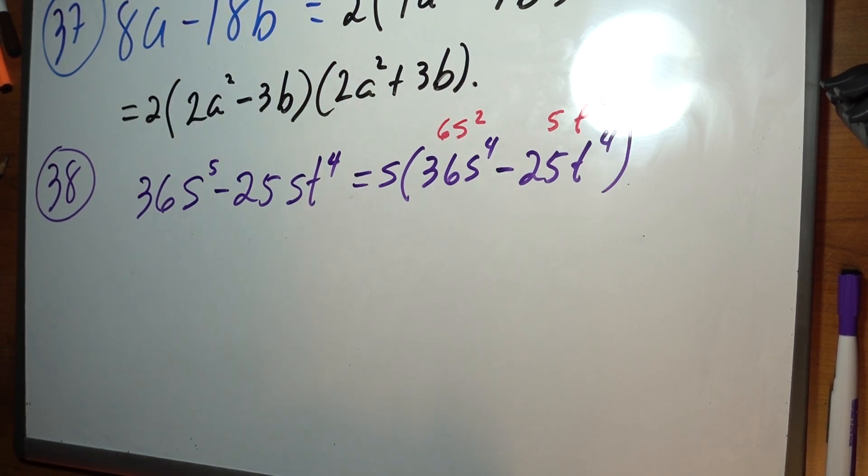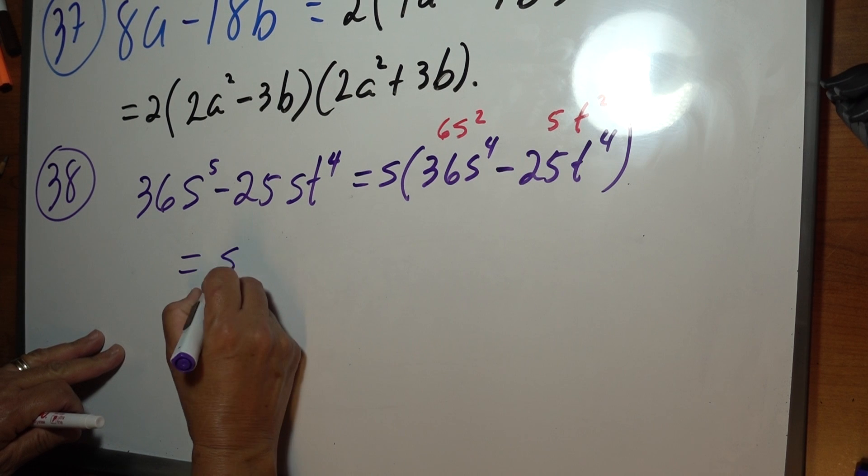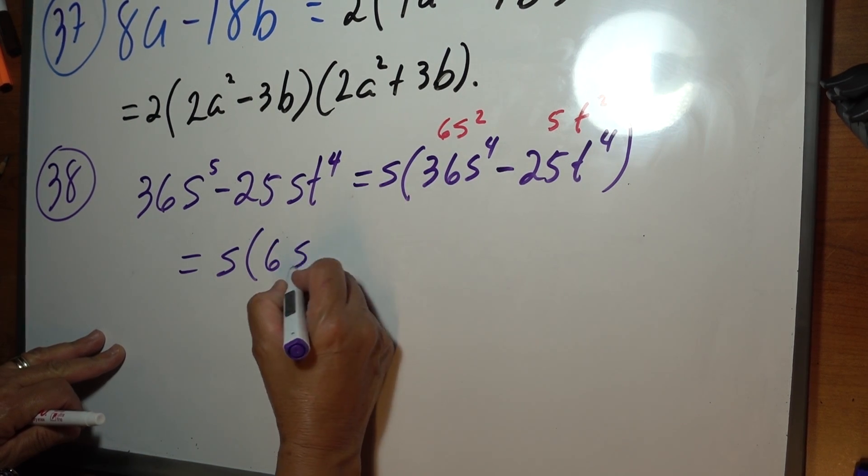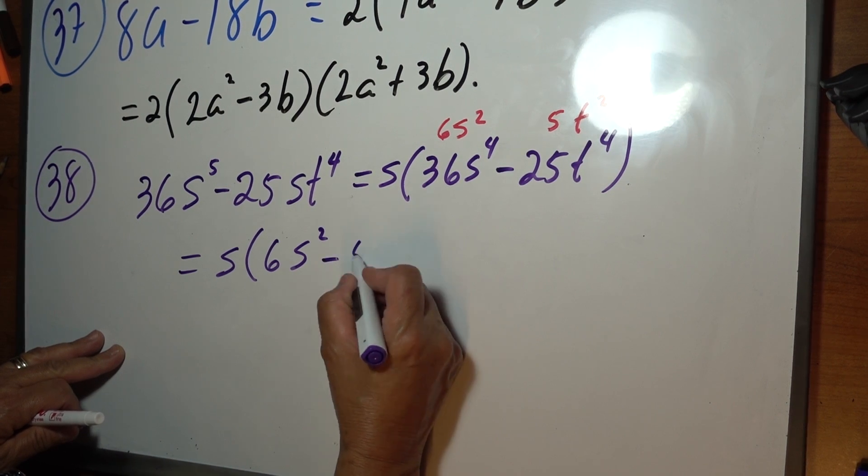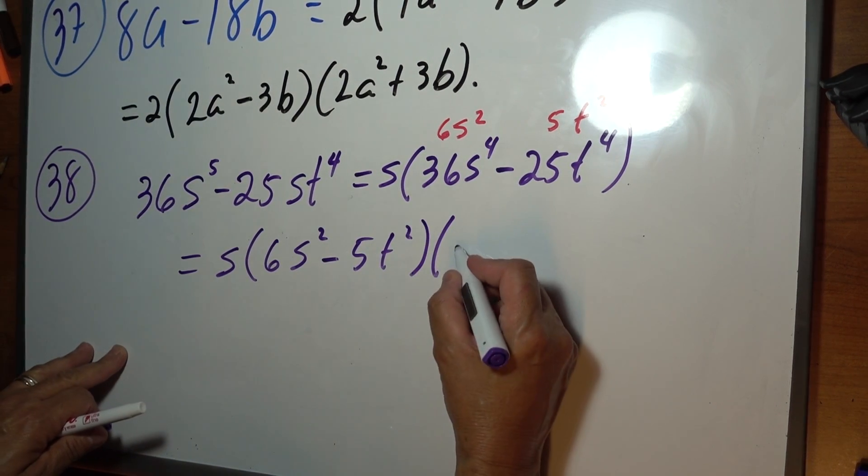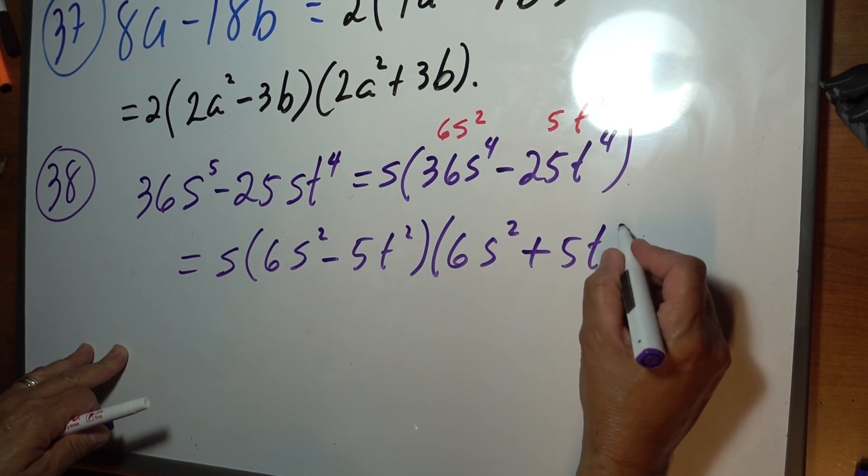Then, continue, this is going to be S times 6s squared minus 5t squared times 6s squared plus 5t squared.